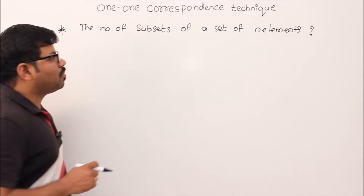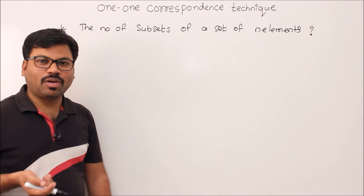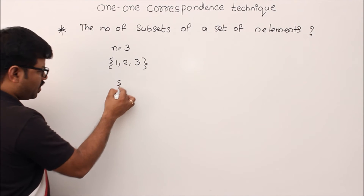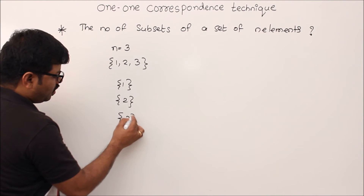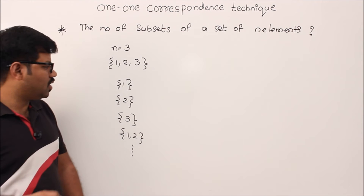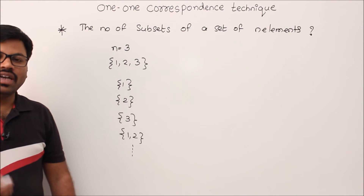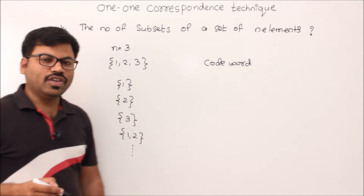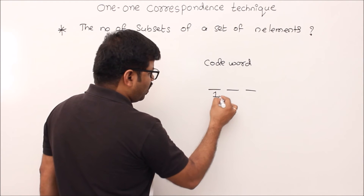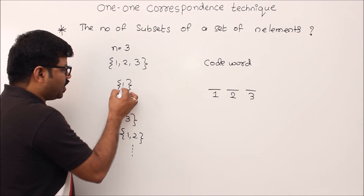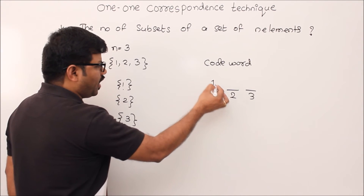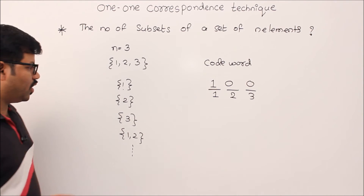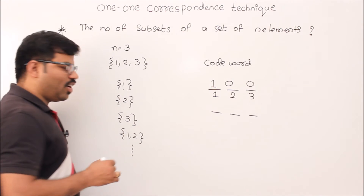We will see one more problem: the number of subsets of a set with n elements. I take n = 3 to understand the problem. When you have three elements, the subsets are {1}, {2}, {3}, {1,2}, and so on. I put a one-to-one correspondence between these subsets and codewords. I design a codeword with three positions. For subset {1}, element one is present so in position one I write 1; since other elements are not present I write zeros. So the codeword is 1 0 0. Every subset has a unique codeword.